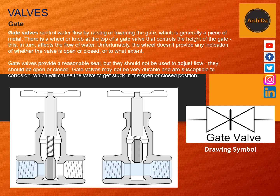Next, we have what is called a gate valve. This is usually located on the main, right before it branches off to several uses — in the kitchen or in the toilet, it branches off on the kitchen sink, the lavatory, the shower stall, and the water closet. Gate valves control water flow by raising or lowering the gate, which is generally a piece of metal. There is a wheel or knob at the top that controls the height of the gate and affects the flow of water. Unfortunately, the wheel doesn't provide any indication of whether the valve is open or closed or to what extent.